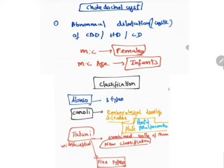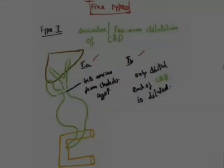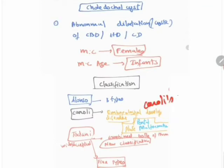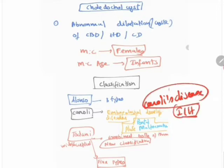Moving on to classification: initially it was classified by Alonzo into three types. Later, Caroli discovered an embryological ductal plate malformation mainly in the portal plate — what he termed Caroli's disease, involving dilatation of the intrahepatic portion of the bile duct. Todani then modified both Alonzo's and Caroli's classifications and combined them into a new classification now widely accepted, comprising five types.